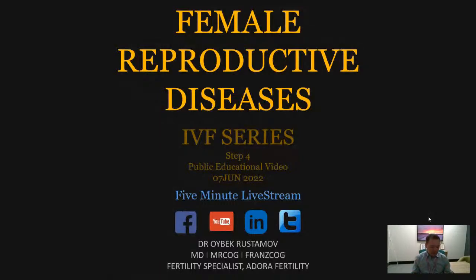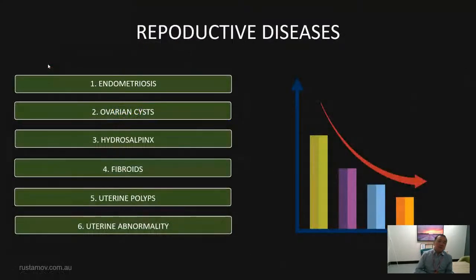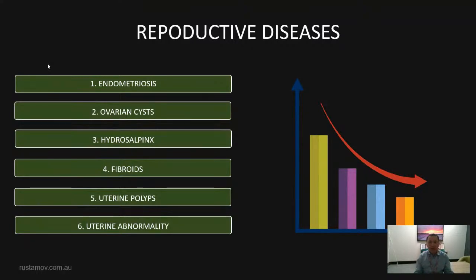This is our IVF series. Today we are going to cover step four, which is reproductive health. In this topic, we will be covering the effect of six reproductive diseases on IVF treatment cycle. We will have a very high level of discussion because we have only five minutes.